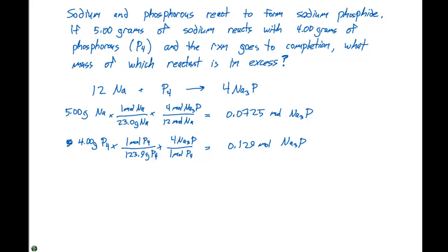This tells us that the 0.0725 is the smallest number. So therefore, the sodium is the limiting reactant. This means that this is also going to tell us that P4 is the excess reactant.